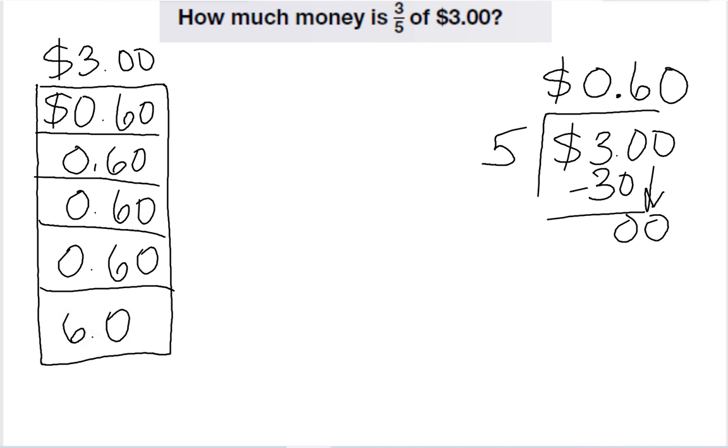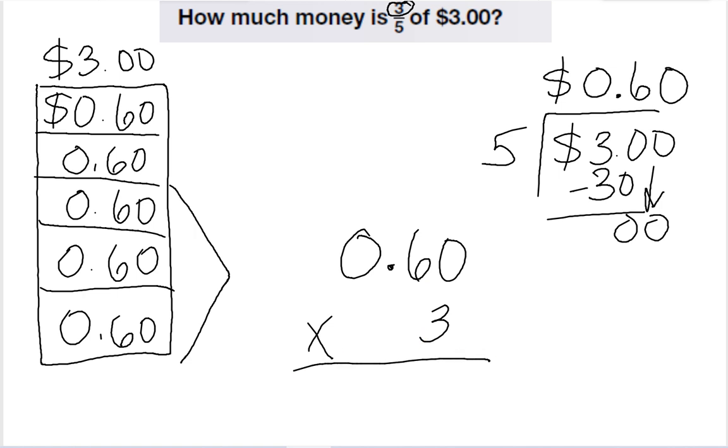Oops. Wrong way. There we go. Alright. So it then asks us how much is three-fifths. So I need three of these boxes. So to find the answer, I'm going to take the sixty cents and times it by three. Three times zero is zero. Three times six is eighteen. So this would be a dollar, one dollar and eighty cents.